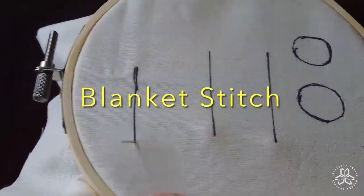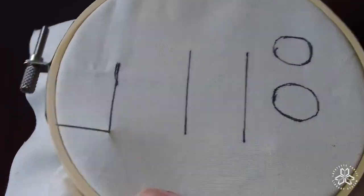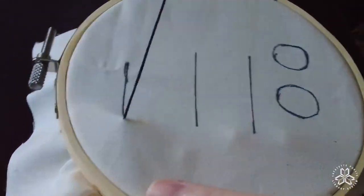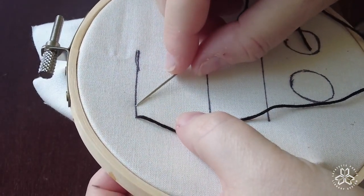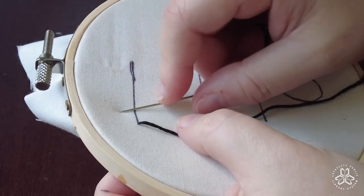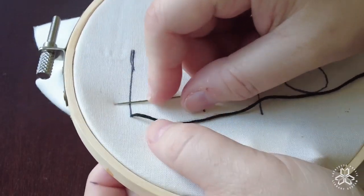I'm going to begin my blanket stitch on the left side of my line, which you are looking at in a horizontal manner. I'm pulling up from the back and then I'm going to count over one stitch length and then go up and that's where I'm going to put in my needle to go behind the fabric.